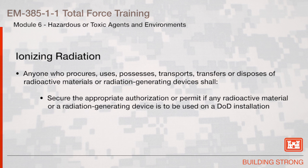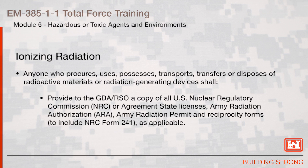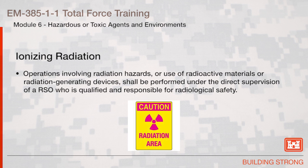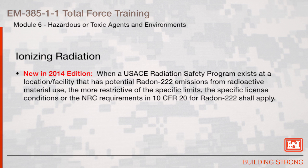Secure appropriate authorization or permit if any radioactive material or radiation generation device is to be used on a DOD installation. Provide to the GDA or RSO a copy of all U.S. Nuclear Regulatory Commission or Agreement State licenses, Army radiation authorization, Army radiation permit, and reciprocity forms to include NRC Form 241 as applicable. Operations involving radiation hazards or use of radioactive materials or radiation generating devices shall be performed under the direct supervision of a RSO, who is qualified and responsible for radiological safety.